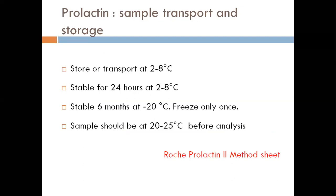The prolactin sample should be stored at 2–8°C or frozen. If left at room temperature for long periods, you may get a falsely low value. These peptide hormones are sensitive to temperature, so if sending a prolactin sample from the ward, ensure a cold chain is maintained, or you may get a falsely low result.